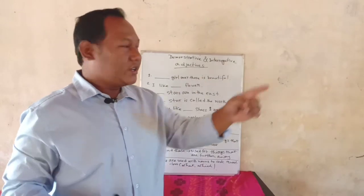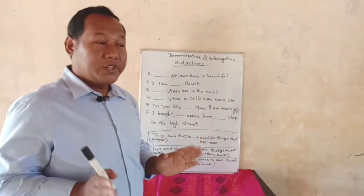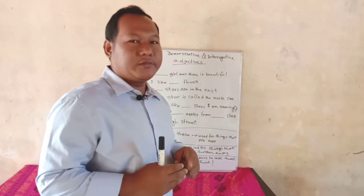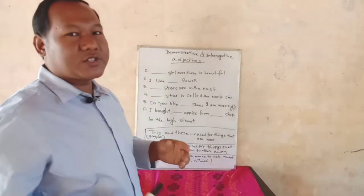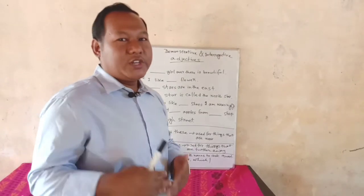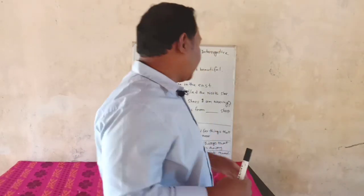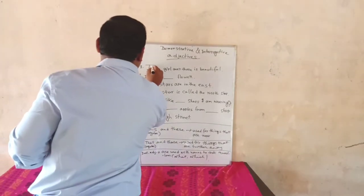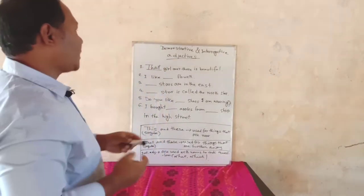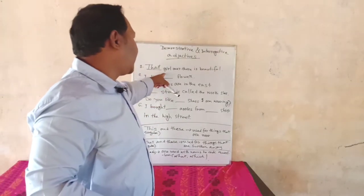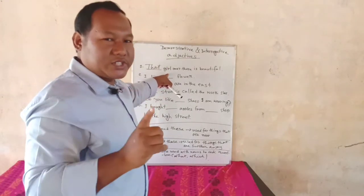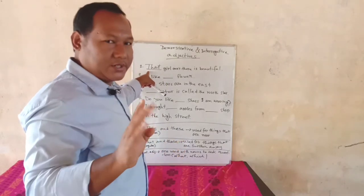So, 'girl' is singular. Which word will go in the blank? Simply, 'that' — because when things are far from us, we use 'that', and the noun is singular. 'Those' would be used when things are plural and further away. So the answer is: 'That girl over there is beautiful.' Girl is a noun and it is a singular noun, that is why we have used 'that'.